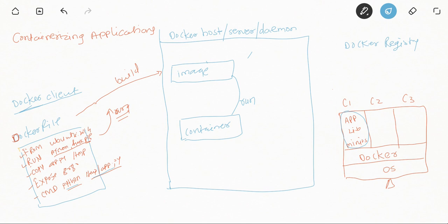Once you run the container, your application process will automatically start inside it. To access the application you simply do 'curl localhost:8080'. There is also something called port binding that we need to configure, but we'll cover that practically when we go through the hands-on example. So using docker build we created an image containing the base OS, dependencies, and application code.